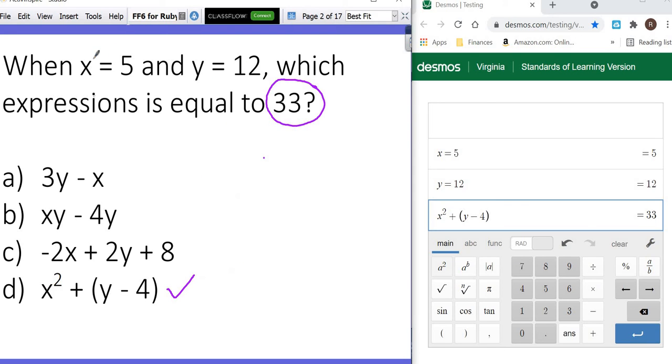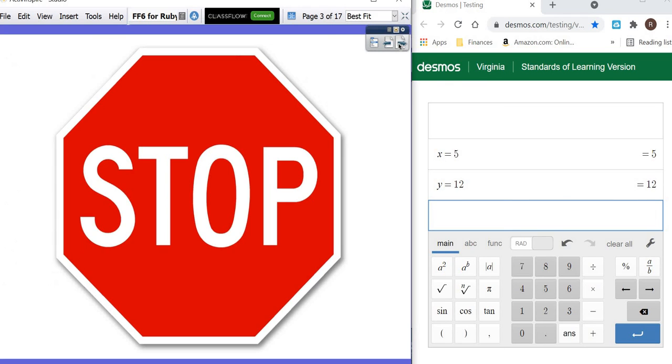But make sure whenever you get something like this, just put x equals 5 on one line, put y equals 12 on another, and then just try each expression until you get to 33. So let's see what comes up next.